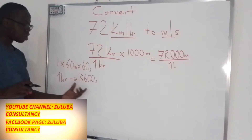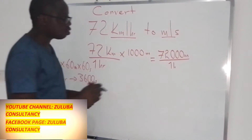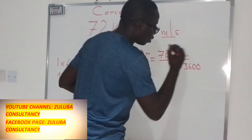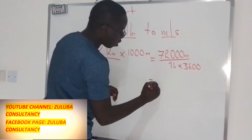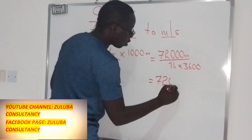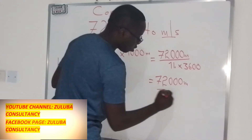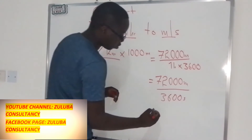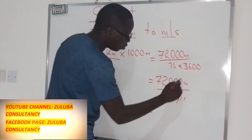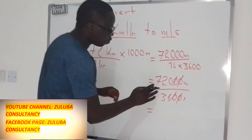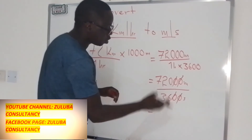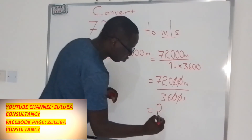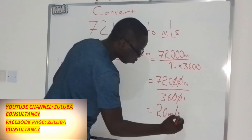So one hour is equal to 3,600 seconds. This means we can replace the one hour with 3,600 seconds. We'll have 72,000 meters divided by 3,600 seconds. If you simplify this, you're simply dividing 720 by 36, which gives us 20 meters per second.